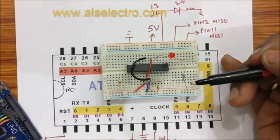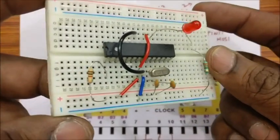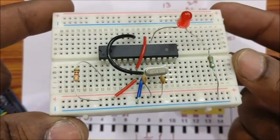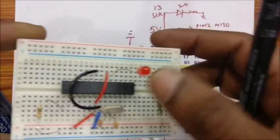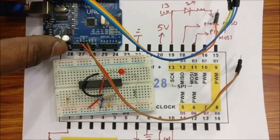Now let us do the connections with the master UNO. 5V of UNO goes to positive rail of breadboard and ground goes to ground rail of breadboard.